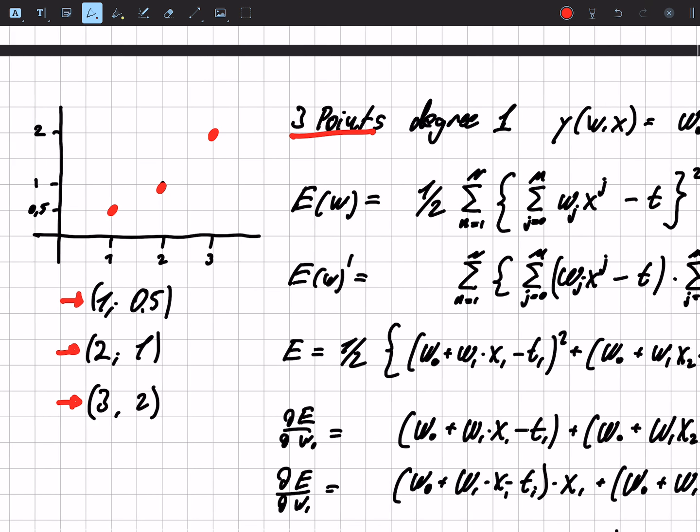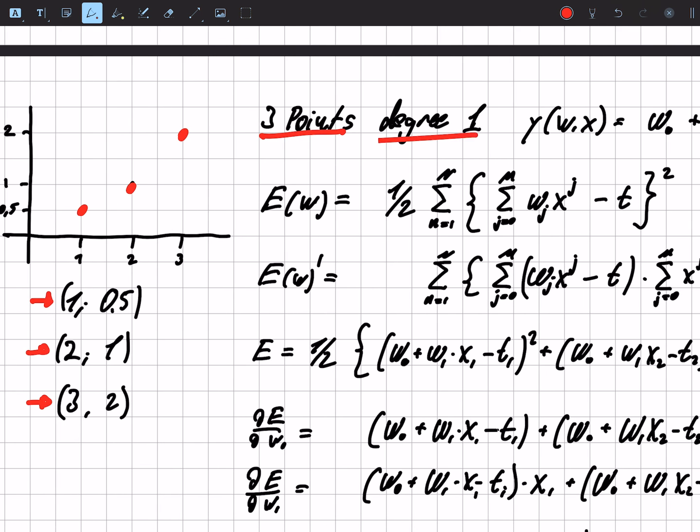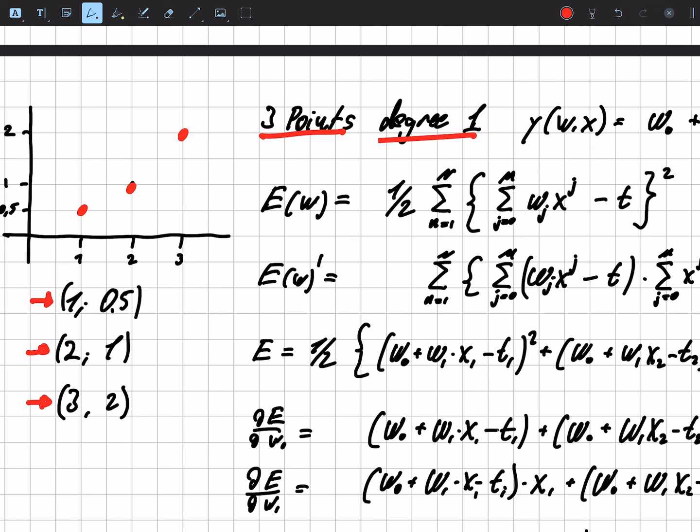So we have three points, and we choose degree one, so we choose a straight line. And now we have to find out where do we fit, what parameters w do we choose to have the optimal line through as many data points or basically as close through the data as possible.